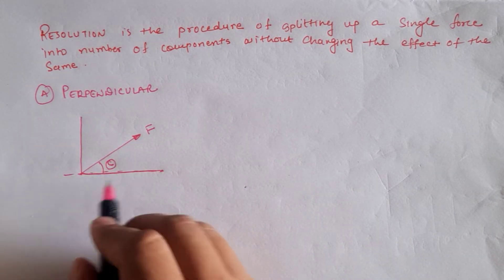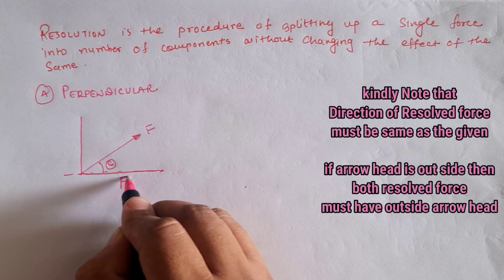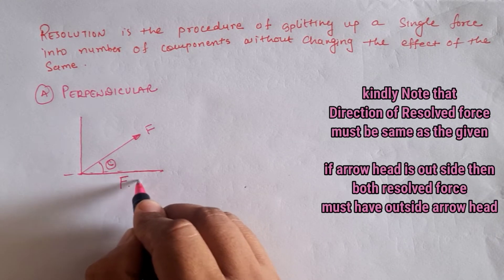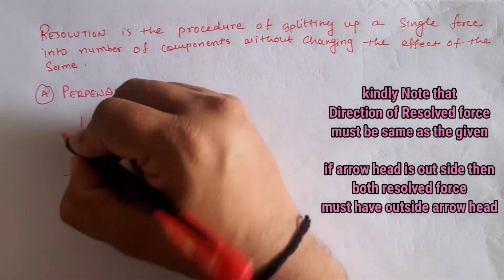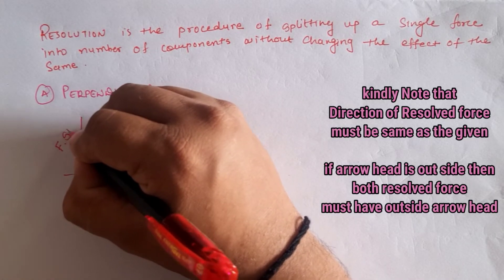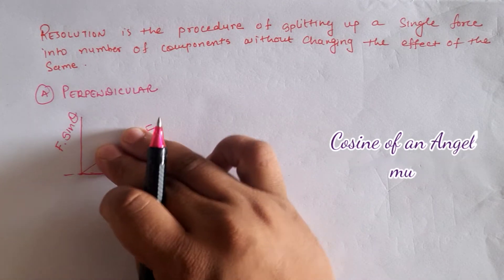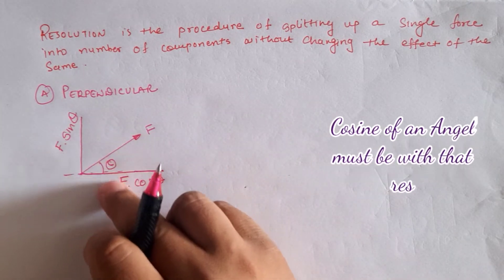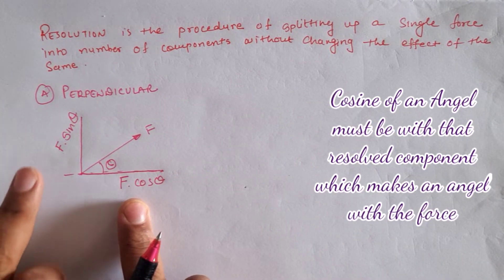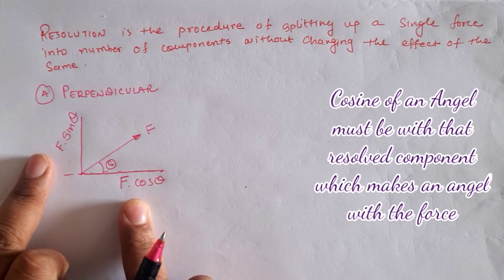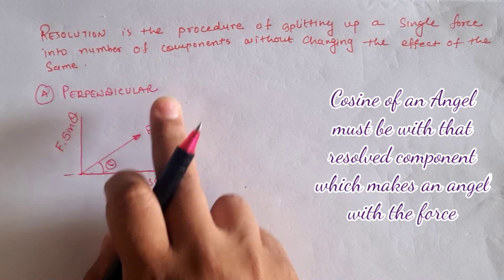The horizontal component is F cos theta, while the vertical component is F sin theta. So if we replace force F at angle theta with the horizontal, then F cos theta and F sin theta represent the perpendicular resolution of the given force.